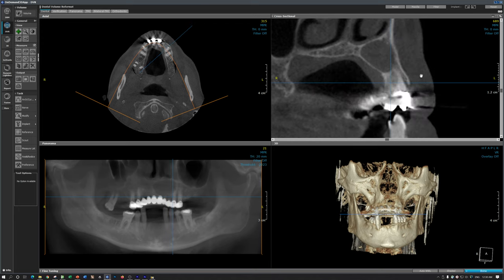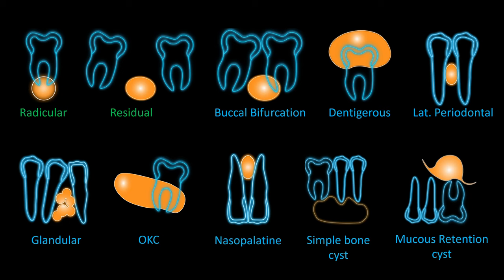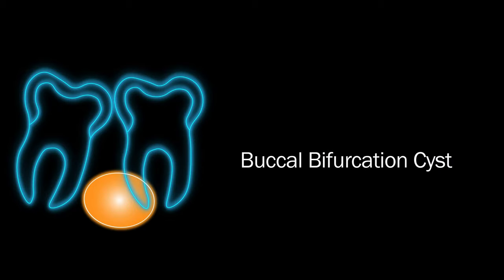We have completed two cysts — radicular and residual. Let's progress to the buccal bifurcation cyst, the third type of inflammatory odontogenic cyst. This is a cyst that happens on the buccal aspect of mandibular molars, mostly in the region of the first molar, sometimes the second molar, in the area of the bifurcation.